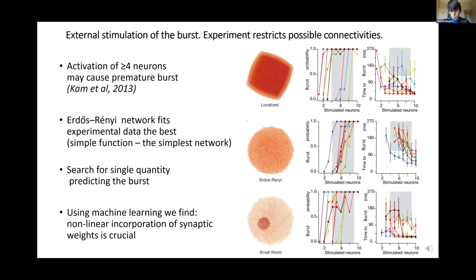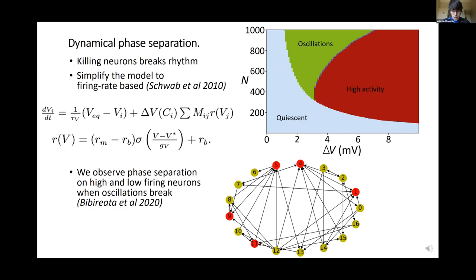It kind of makes sense because the function of this complex is pretty simple, just to produce rhythmic activity. Apparently, just the simplest network, which is Erdős-Rényi, is enough to cover this function. To conclude with this external stimulation part, we also would like to understand which features of the network and the stimulated neurons are important to predict whether the burst will happen or not. We see that significant improvement happens if we incorporate synaptic weights in a non-linear way, which reflects the fact that the neurons interact in a highly non-linear way.